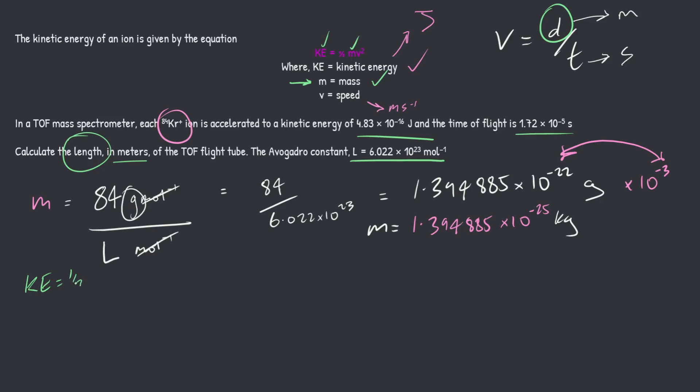So let's write this out. KE equals half M V squared. If I want to rearrange that to make V squared the subject, it's just going to be V squared equals, divide both sides by M and times by 2 because we've got a half here. So it's going to be 2 KE over M. Now, if we want to get rid of this square root, all we have to do is square root both sides. So it's going to be V equals square root 2 KE over M. So now hopefully you're seeing a pattern here. We're going to work out what V is, and then we're going to feed that into this equation, rearranged to make D or the length of the flight tube the subject.